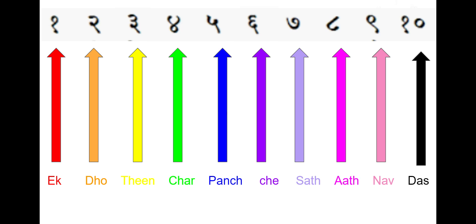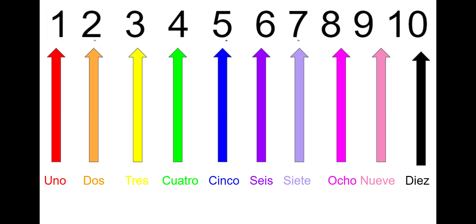The next and last language is Spanish. The numbers are the same as English numbers, but the pronunciation is different. One is Uno. Two is Dos. Three is Tres. Four is Cuatro. Five is Cinco. Six is Seis. Seven is Siete. Eight is Ocho. Nine is Nueve. And ten is Diez.